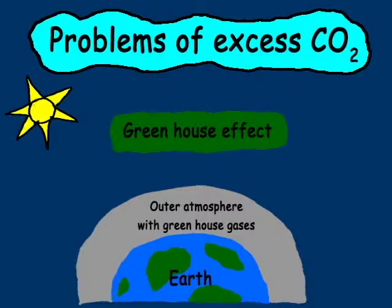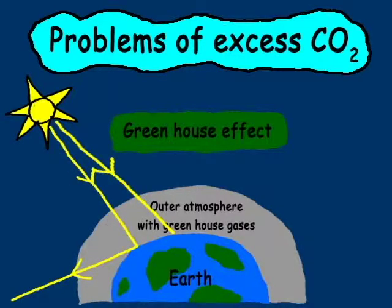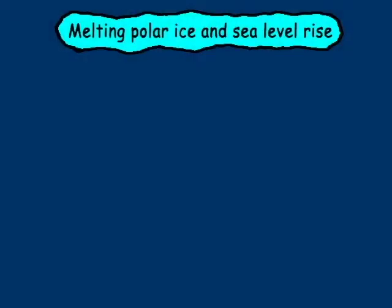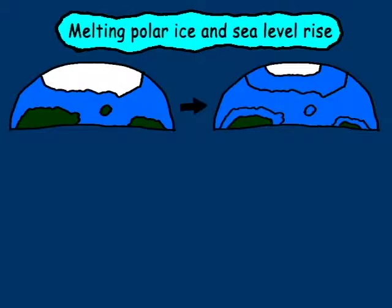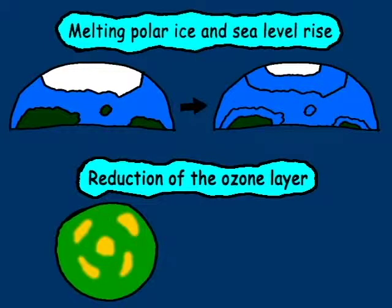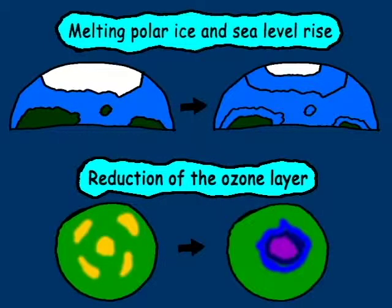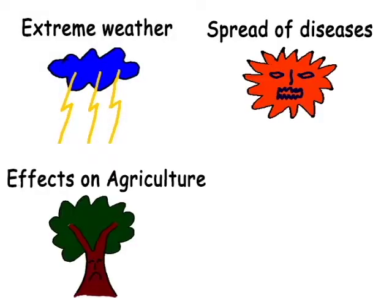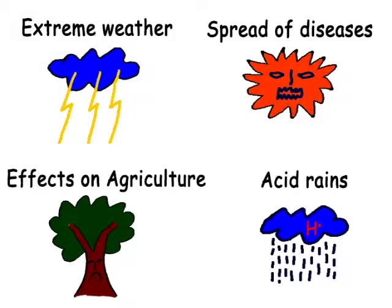Carbon dioxide is a greenhouse gas, and excess carbon dioxide directly results in increasing the Earth's temperature. The greenhouse effect results in melting polar ice and depletion of the ozone layer. Excess carbon dioxide in the atmosphere can cause extreme weather, spread of diseases, acid rain and effects on agriculture.